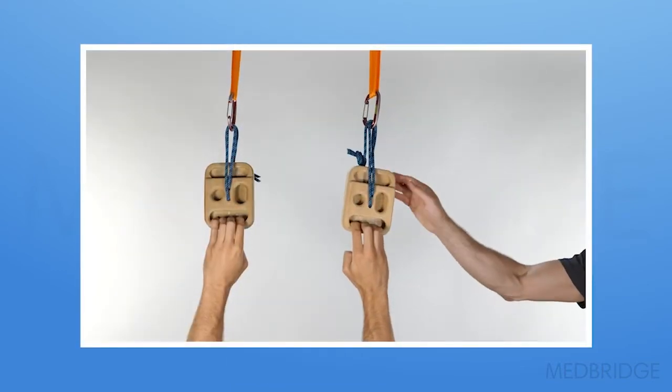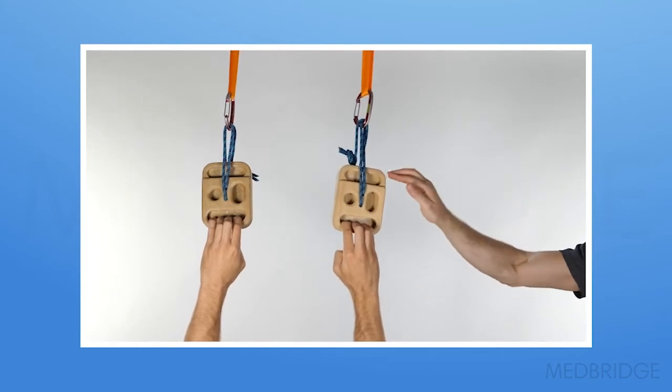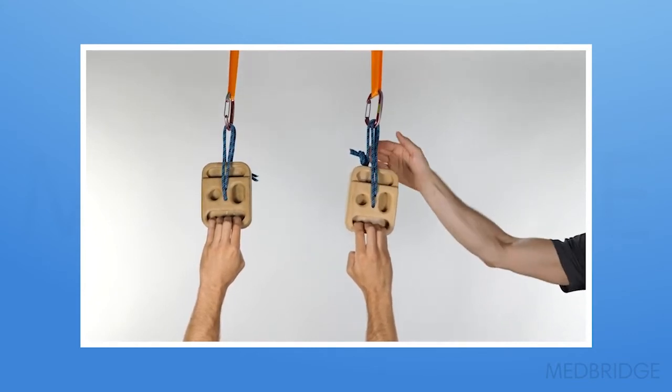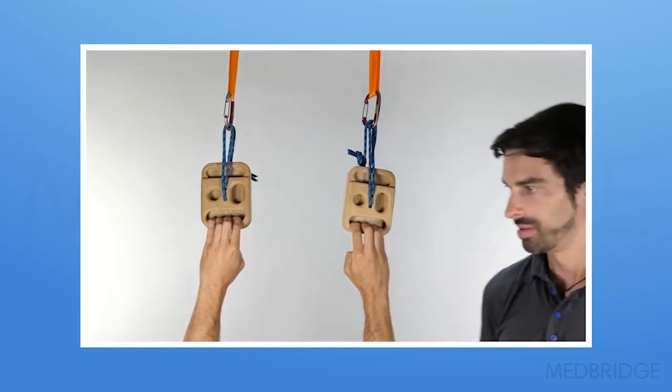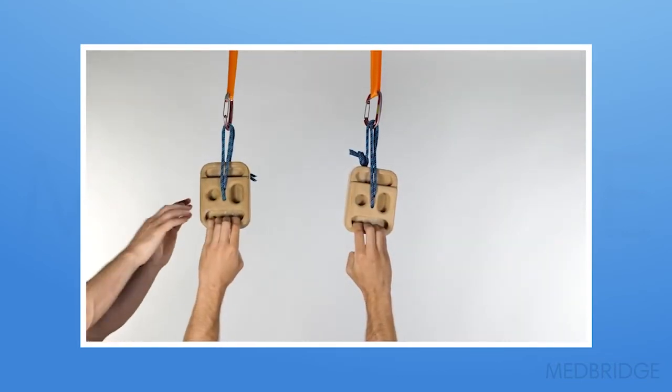And here you can see a climber is hanging from their fingertips with an unstable surface. And again, the clinician is providing perturbatory stresses, challenging not only the fingers, but also the entire kinetic chain and shoulder girdle.